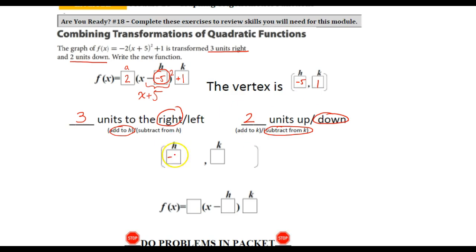So our h value is negative 5, our k value is 1. For this one, we're going to add 3 because we did move to the right. And then for our k, we're going to subtract 2 because it's going down. So if I did that, my new vertex would be, my new h and my new k would be: negative 2 and negative 1. So I'd write that in.